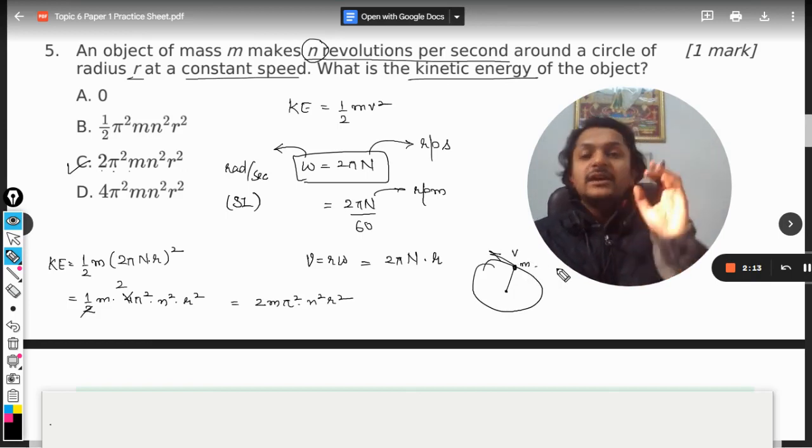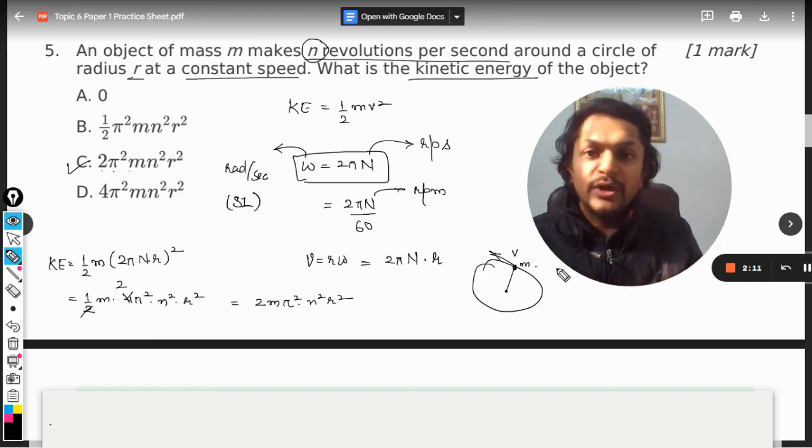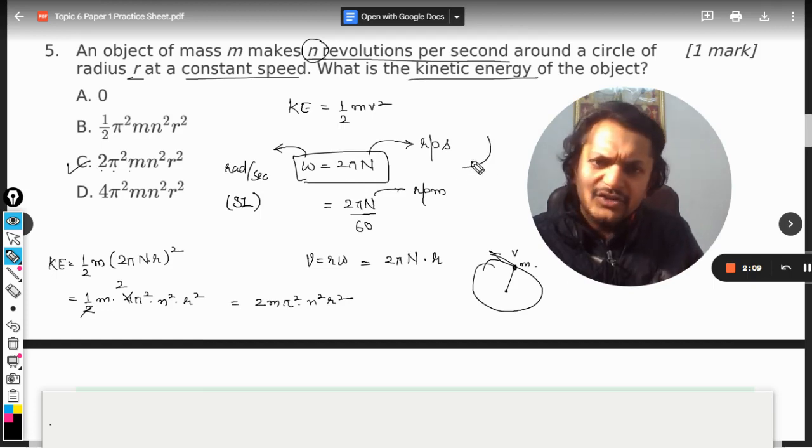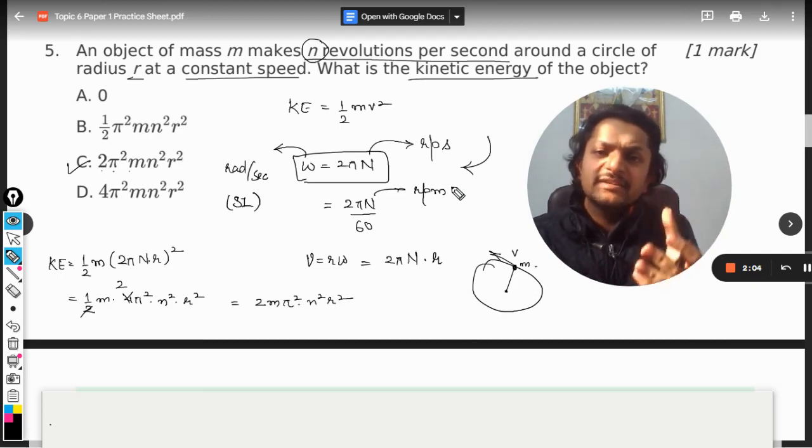And then kinetic energy is half m v square. This formula is actually not a formula but like you can remember it as a formula. And this is seldom given in the books, so you have to see this.